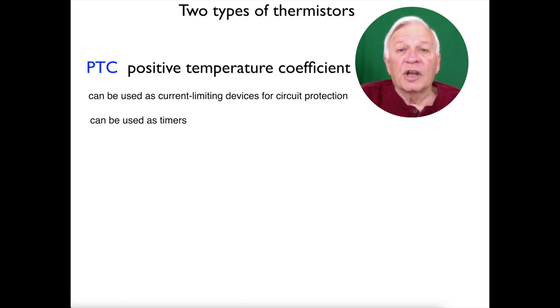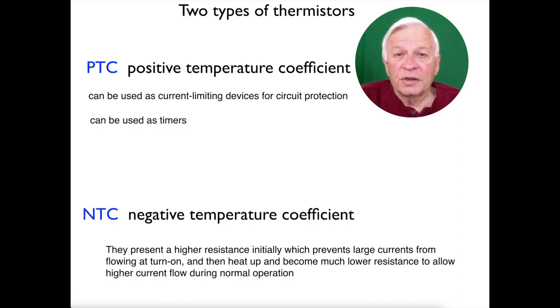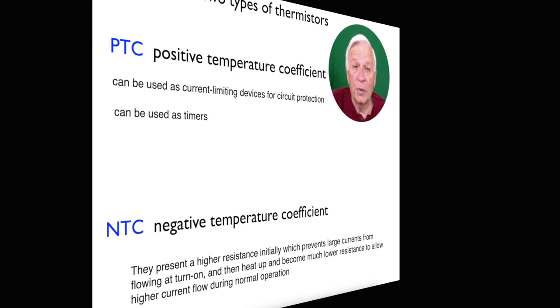There are two types of thermistors, positive temperature coefficient, and they can be used as a current limiting device, like for circuit protection, and they can also be used as timers. Negative temperature coefficient sensors, now they present a higher resistance initially, which prevents large currents from flowing and turning on, and then they heat up. And because they heat up, they become much lower resistance to allow high current flow during normal operation.